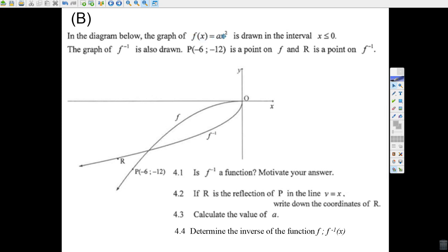f(x) equals ax squared, that's this graph here. It is drawn in the interval where x is less than or equal to zero. So there's a restriction. It's only x is negative or equal to zero. That's what we're looking at here.